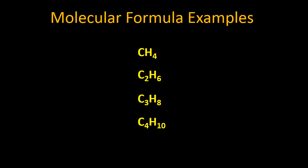Next is ethane — when we talk about a 2-carbon hydrocarbon chain, it is known as ethane, and ethane consists of 2 carbon atoms with 6 hydrogen atoms. After that, propane — the molecular formula of propane shows that it contains 3 carbon atoms and 8 hydrogen atoms.